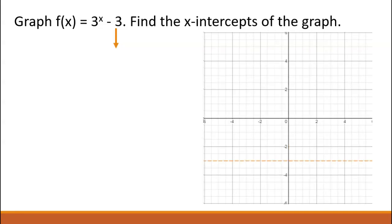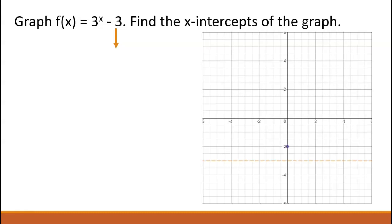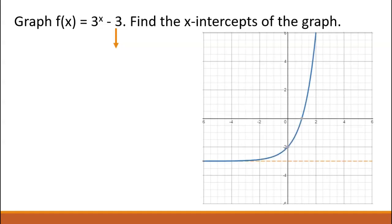Third, graph the pivot point. The pivot point in the parent graph is just 1 above the asymptote on the y-axis. Since we didn't shift left or right, nor did we stretch this graph, its pivot point is at (0, negative 2). Fourth, determine if it is a growth or decay graph. Since the base is 3 and that is greater than 1, this is growth. Now that we have graphed it, we can find the x-intercepts.